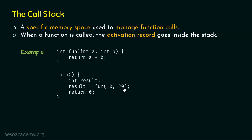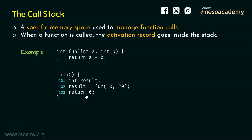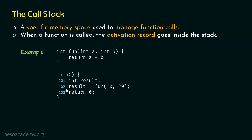a is holding value 10, b is holding value 20. a plus b will be 10 plus 20, which equals 30. So 30 will be returned from this function and received by the variable result. Now let's say these are the addresses of the instructions: 101 is the address of the result declaration, 102 is the address of the function call, and 103 is the address of the return 0 statement. Each instruction of this program receives some address in memory.